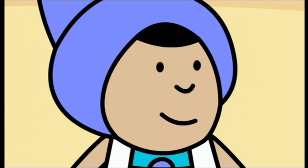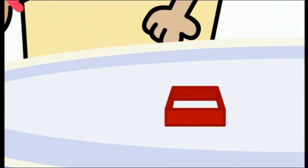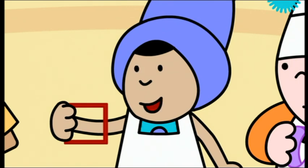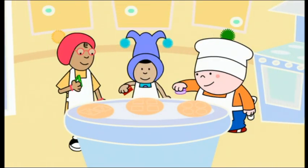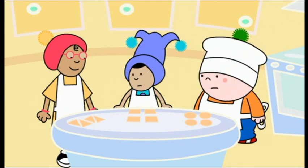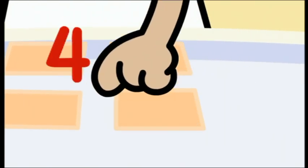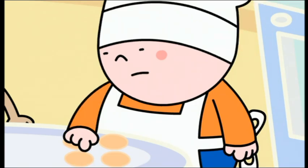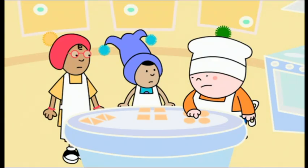Now we're ready to cut out the biscuit shapes. You choose the shape first, Oggie. I'd like to use this round shape, please. And I like this pointy one. I like this shape — it's a bit like a window! Look at all these round ones. Mine look different from yours, Oggie. How many straight sides are there on your biscuits, Bobbin? One, two, three. Mine have one, two, three, four. How many straight sides do you have, Oggie? That's funny — my shape doesn't have any straight sides. Maybe there's something wrong with it. I wish I knew what.